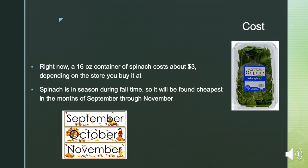The cost of spinach right now, if you were to go to the store for a 16-ounce container, would be about $3 depending on the store and whether you buy organic or not. It also depends if it's frozen or canned. Spinach is in season during fall, so that's when it will be found cheapest, in the months of September through November.